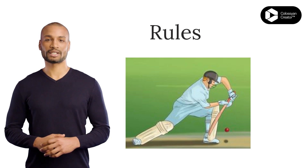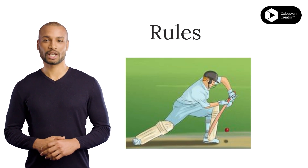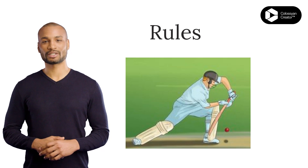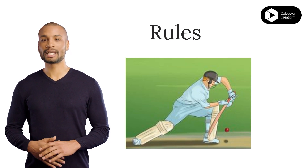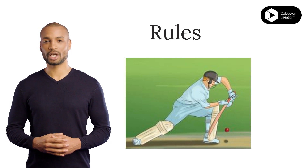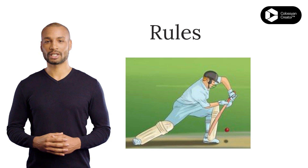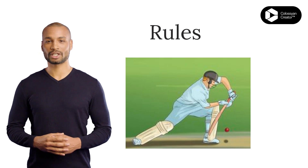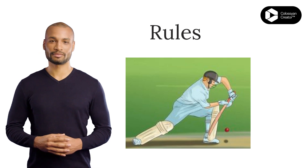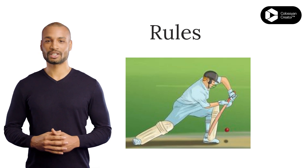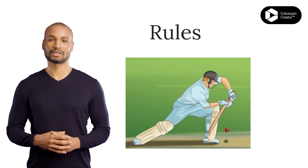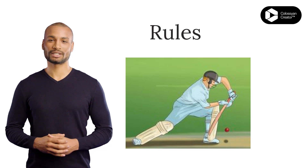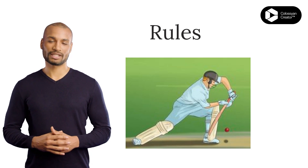A run is scored when the batsman hits the ball and runs to the other end of the pitch. If the batsman misses the ball, or if it is caught by a fielder, the batsman is out. Cricket also features a unique and challenging system of bowler and batsman, which requires skill, strategy, and teamwork from both sides.